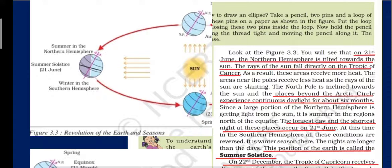The North Pole is inclined towards the sun, and the places beyond the Arctic Circle experience continuous daylight for about six months. Since a large portion of the northern hemisphere is getting light, it is summer in the regions north of the equator — the longest day and shortest night occurs on 21st June. At this time, all these conditions are reversed in the southern hemisphere; it is winter season there, with nights longer than the days. This position of the earth is called the summer solstice.